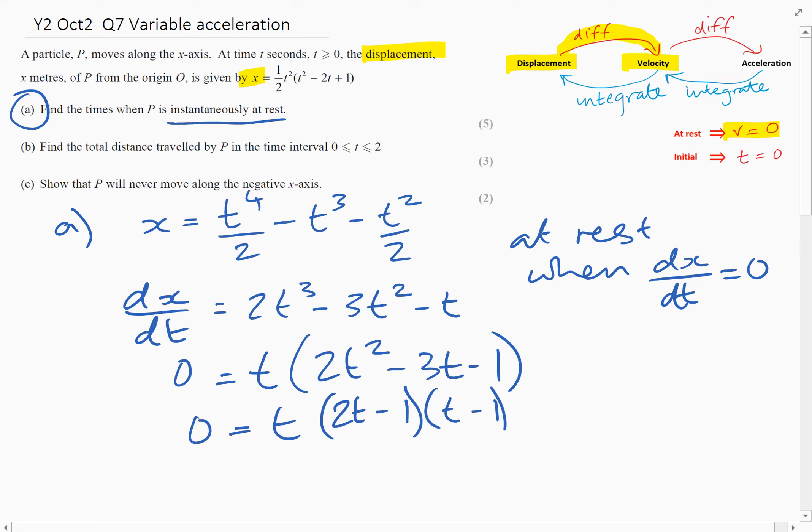So we don't need to solve that. It's very quick to factorize, although you could have just used the equation solver using the cubic solver. But we can see from this, from factorizing, we're going to get T equals zero, T equals a half, and T equals one. So that's the answer to part A.